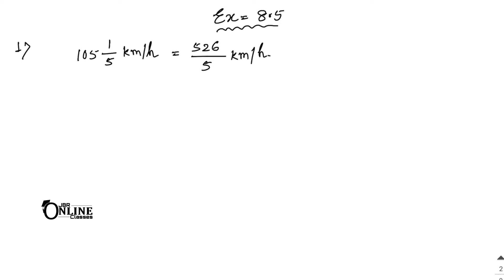Find the distance covered in 3 and 3/5 hours. Convert 3 whole 3/5 to an improper fraction: 5 × 3 = 15, and 15 + 3 = 18. So the time is 18/5 hours.